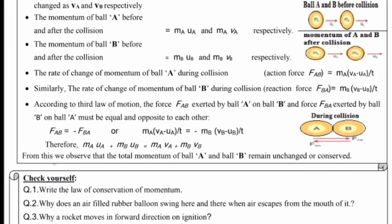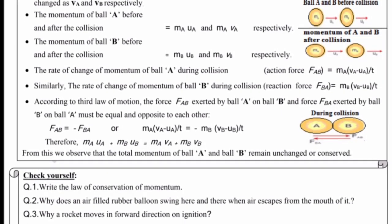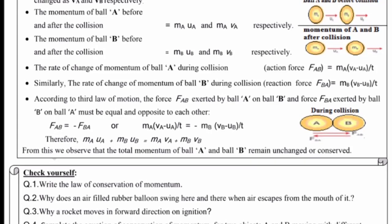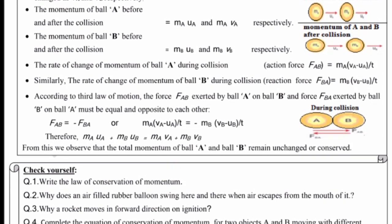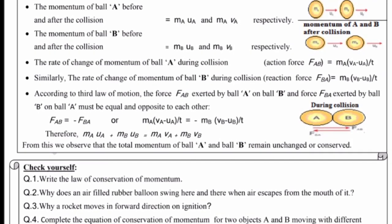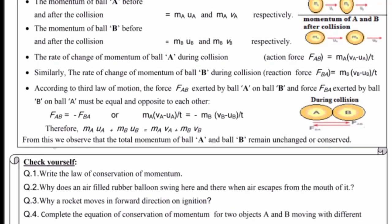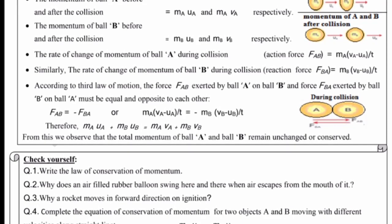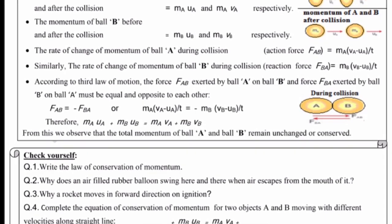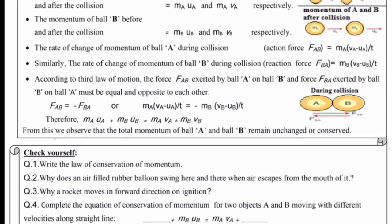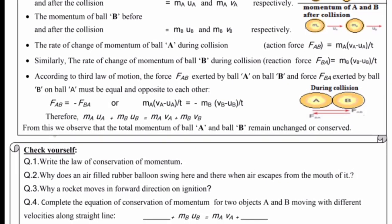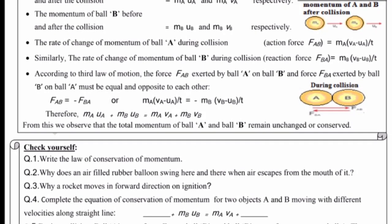Or mA(vA - uA)/t is equal to minus mB(vB - uB)/t. Therefore, mAuA plus mBuB is equal to mAvA plus mBvB. This is before collision and after collision.